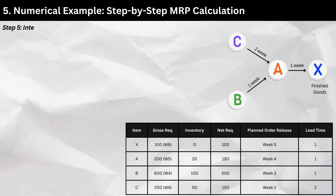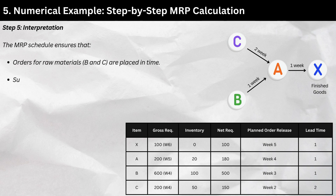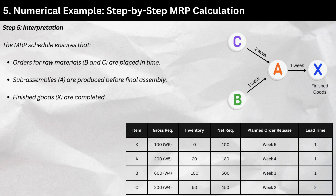Step 5 — Interpretation. The MRP Schedule ensures that orders for raw materials B and C are placed in time, subassemblies (A) are produced before final assembly, and finished goods (X) are completed by week 6 without delay.